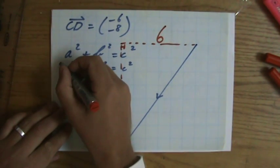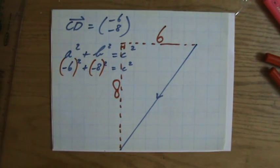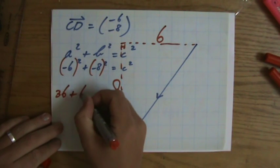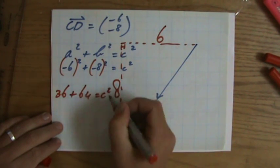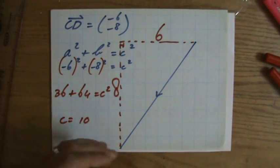6 squared plus 8 squared equals the hypotenuse squared. Or, you're able to use a calculator properly and you put some brackets around that: minus 6 squared plus minus 8 squared equals c squared. 36 plus 64 equals c squared. Your answer is going to be 10.